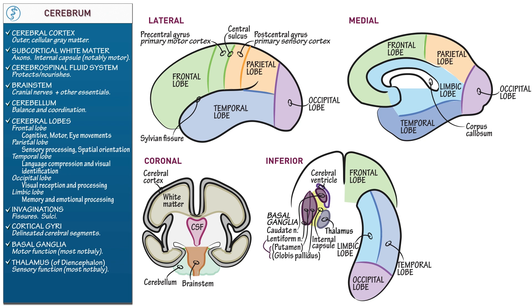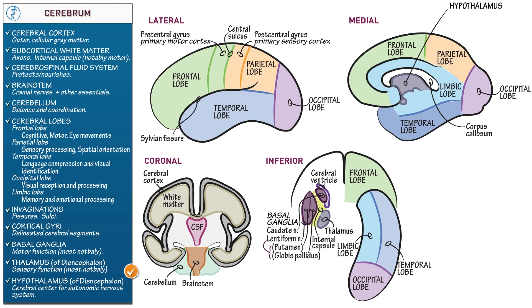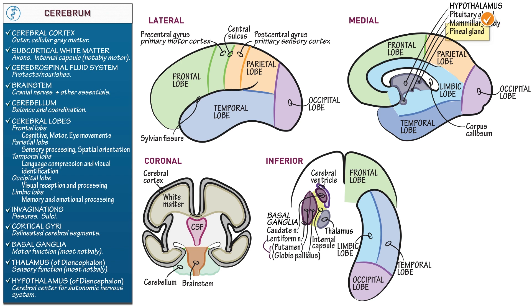In the medial view, draw the hypothalamus of the diencephalon in the center of the cerebrum. It's the cerebral center for the autonomic nervous system; hypothalamic injury causes widespread autonomic dysfunction, sometimes called autonomic storm. Label the pituitary gland, which produces and secretes hormones — its posterior division is part of the hypothalamus. Label one of the mammillary bodies, which are involved in memory. Then draw the pineal gland, which notably creates and secretes melatonin.